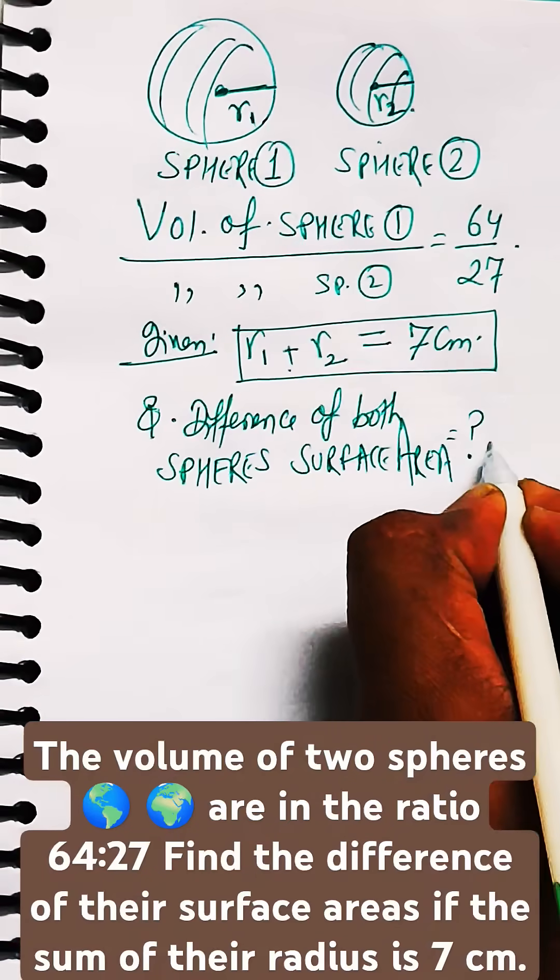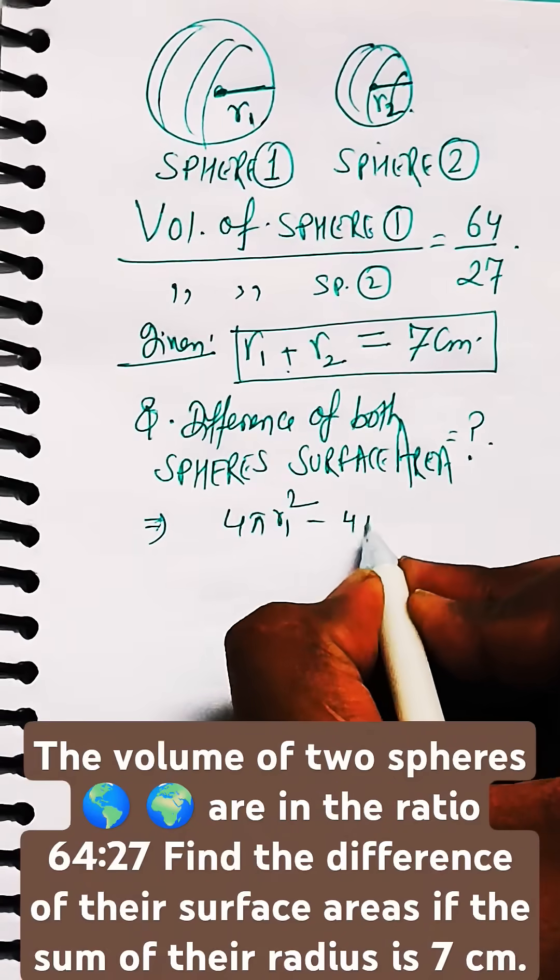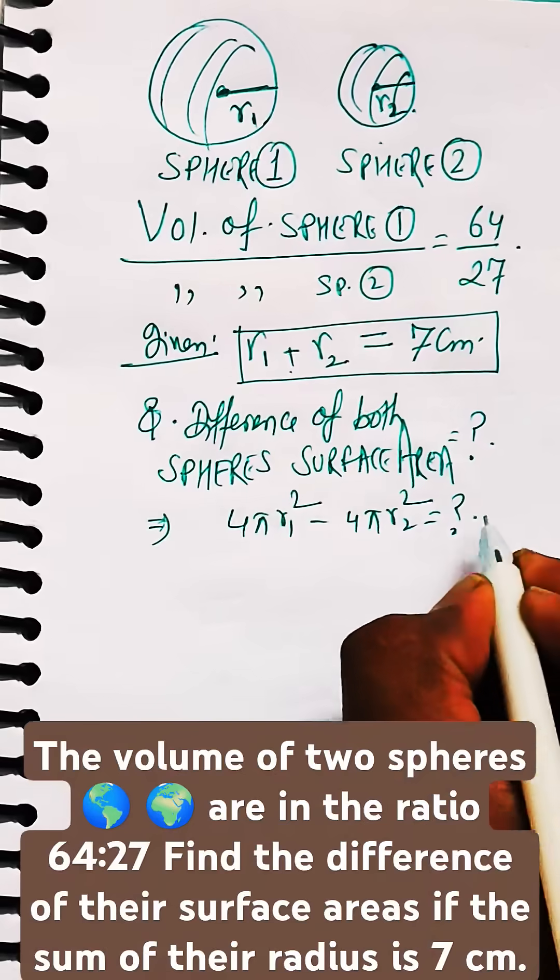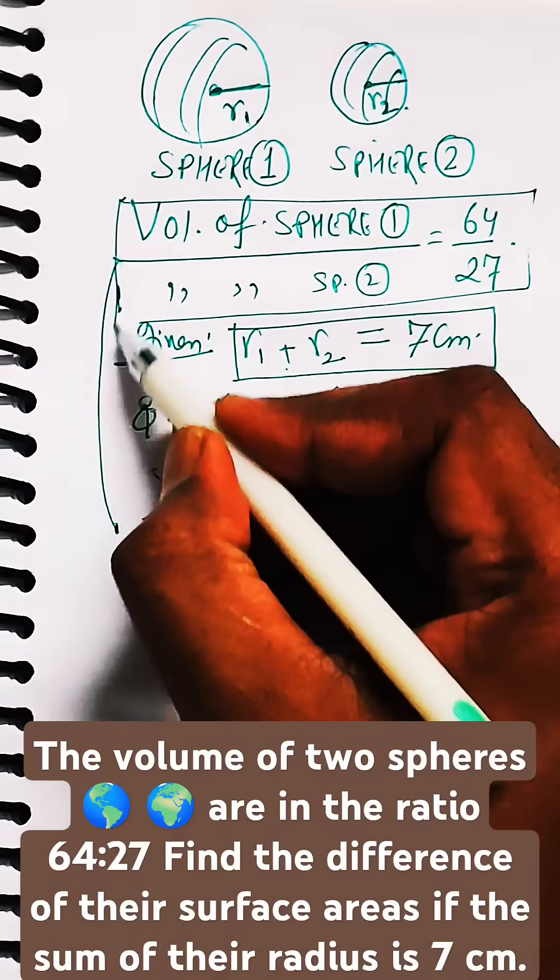You know the formula of the surface area of any sphere is 4πr². So the difference in the surface area is equal to 4πr1² minus 4πr2². That value we need to calculate.